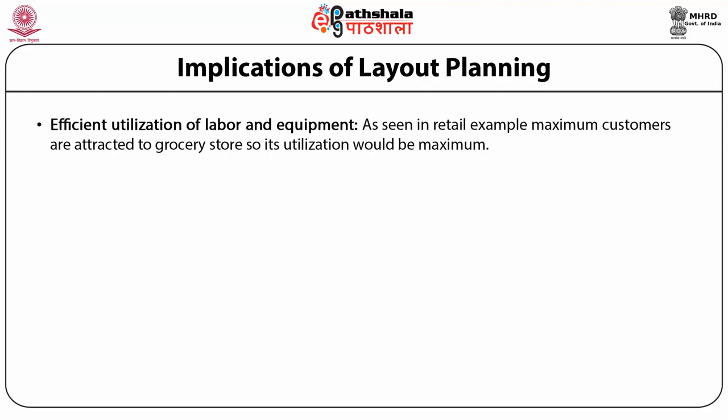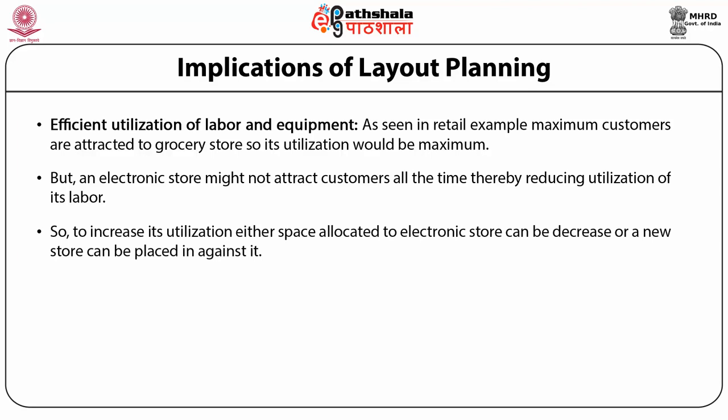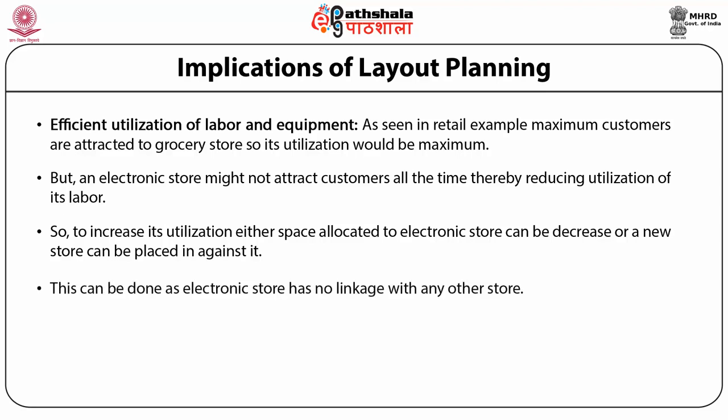Efficient utilization of labor and equipment is another implication. As seen in the retail example, maximum customers are attracted to the grocery store, so its utilization would be maximum. But an electronic store might not attract customers all the time, reducing utilization of its labor. To increase its utilization, either the space allocated to the electronic store can be decreased or a new store can be placed adjacent to it, since the electronic store has no linkage with any other store.